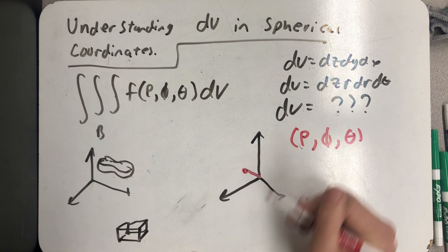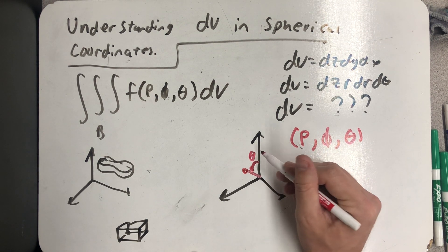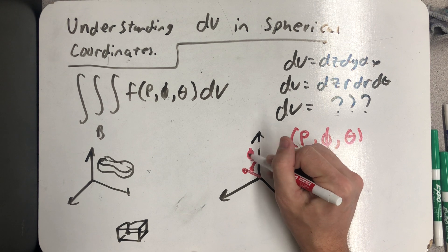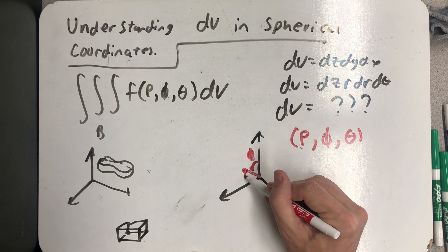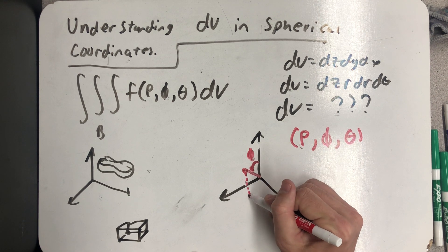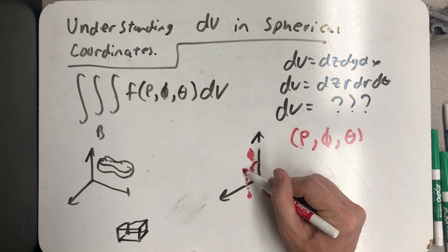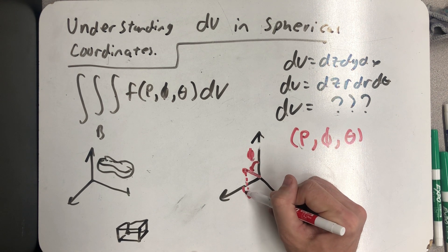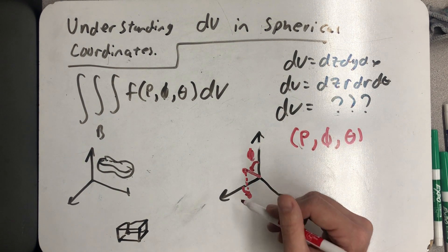So that distance is ρ, φ is the angle I've rotated down from the z-axis, and then θ is an angle that's been rotated over in the plane to that point projected below.